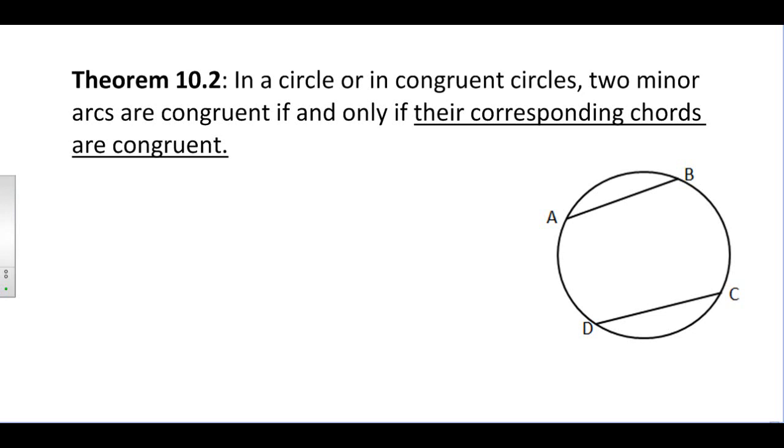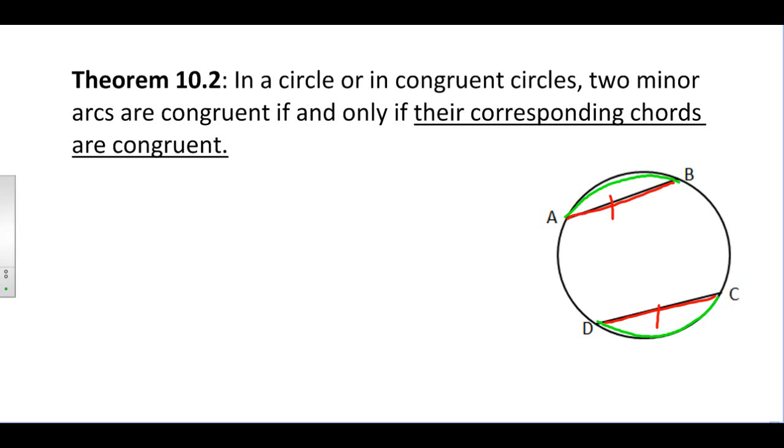What this is saying is the only time that these two arcs, arc AB and arc CD, are going to be congruent to each other is if the chords happen to be congruent to each other. So if chord AB and chord DC are congruent to each other, if segment AB is congruent to segment DC, then the arcs AB and DC would have to be congruent to each other.